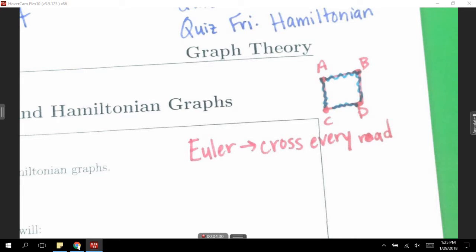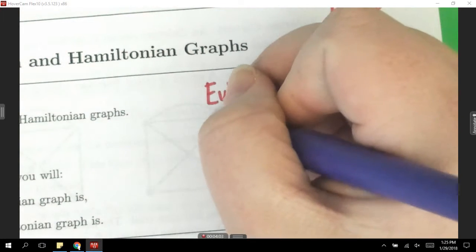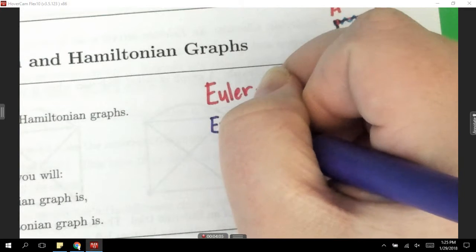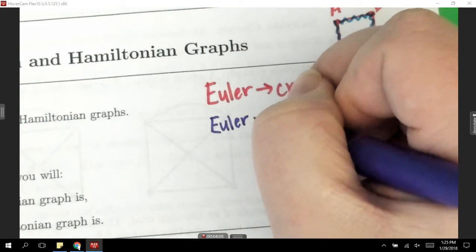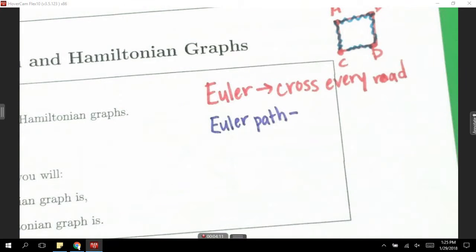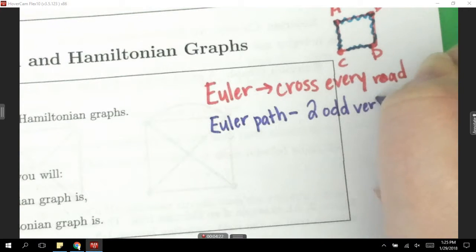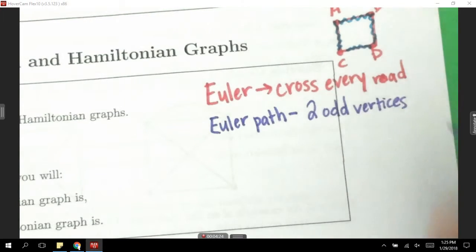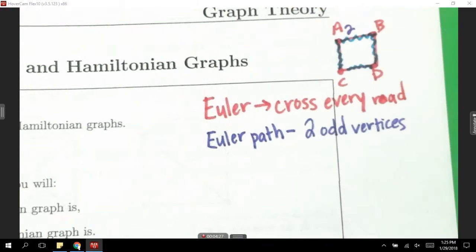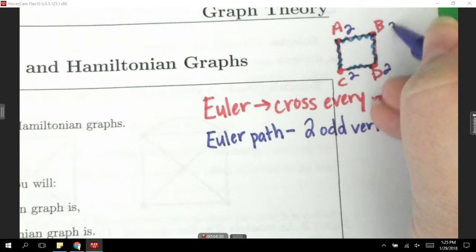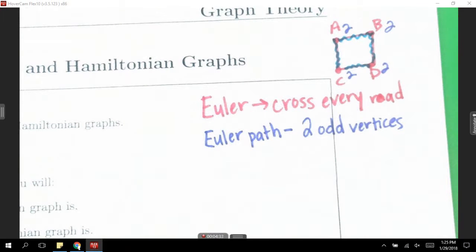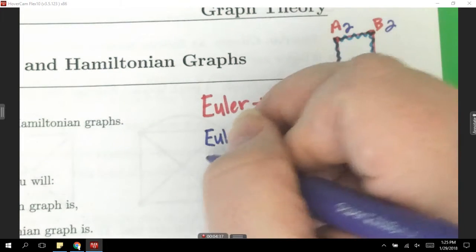We talked about Euler paths and circuits last week. What was the deal with an Euler path? How many odds? That's the one with exactly two. How do you figure out the vertices? You count. Right now A has two roads poking out of it. C has two, D has two, B has two. And those are all even numbers. That's what we're looking at when we say even or odd.